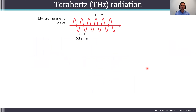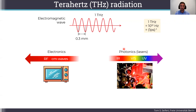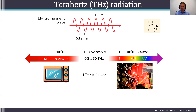So first, what is terahertz radiation and why is it interesting? Terahertz radiation is an electromagnetic wave with a wavelength of 0.3 millimeters and a duration of one oscillation of one picosecond. If you look at the entire electromagnetic spectrum, the terahertz window is located in the center between the low-frequency side with RF radiation and the high-frequency side covered by lasers and visible light. One photon of terahertz radiation has an energy of 4 milli-electron volts, so it is quite a low energy.